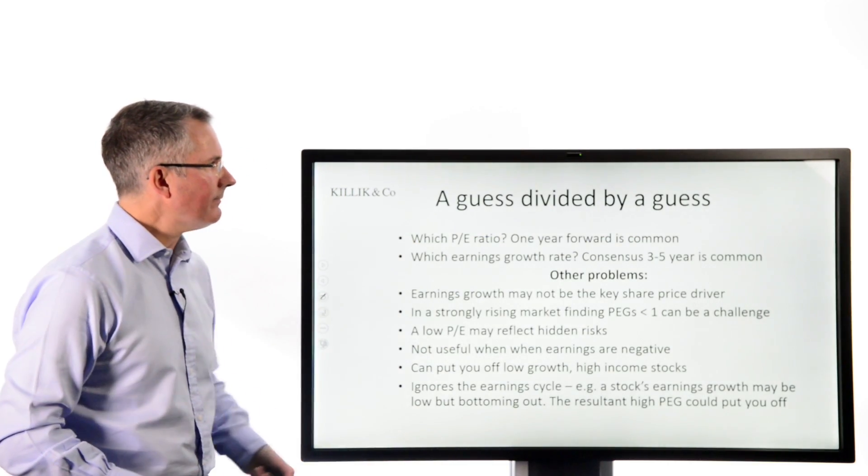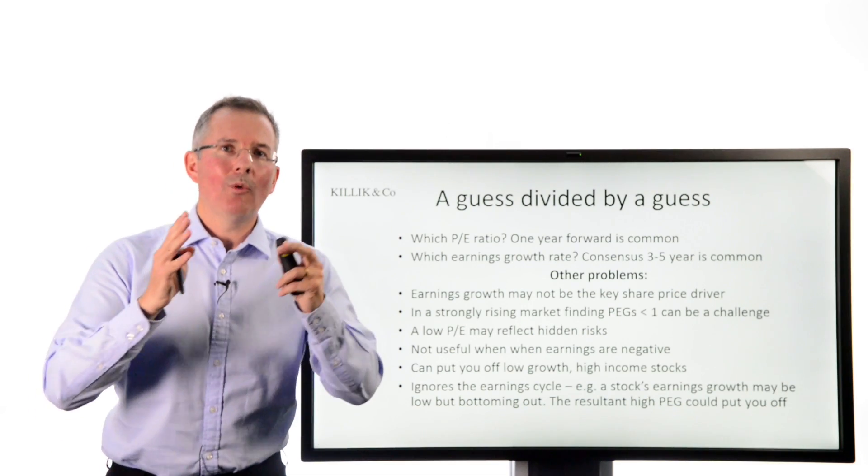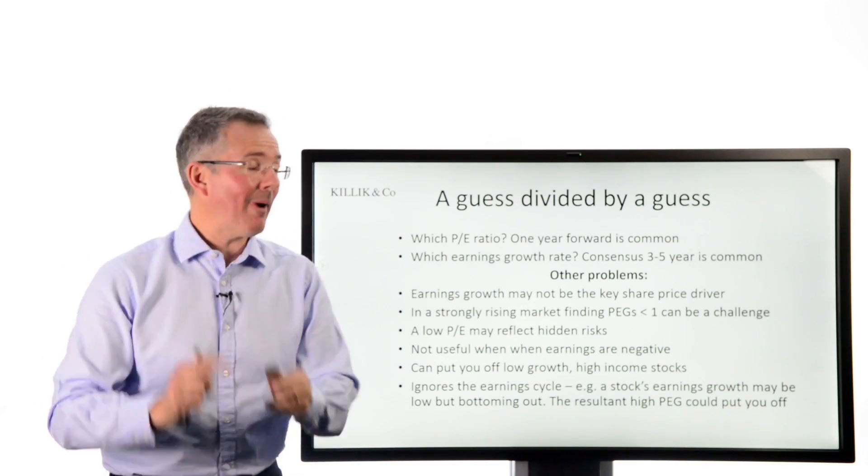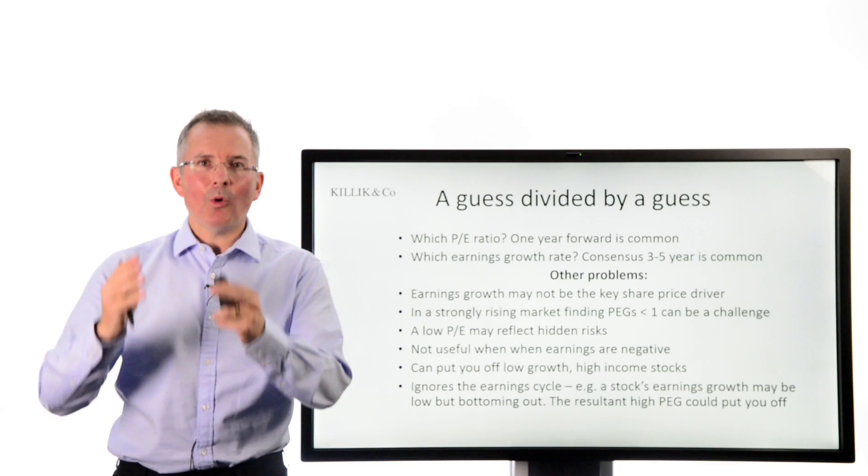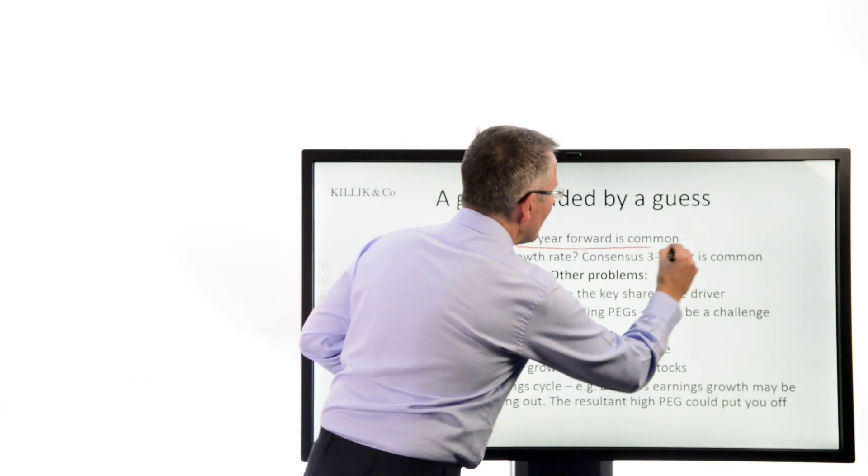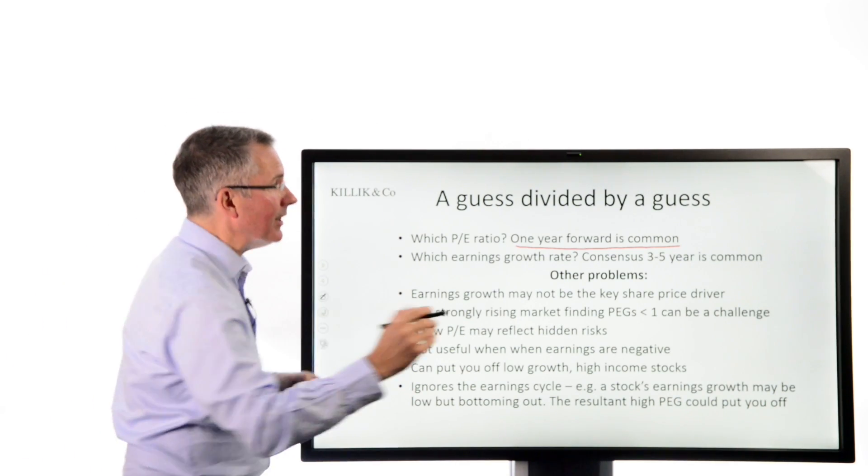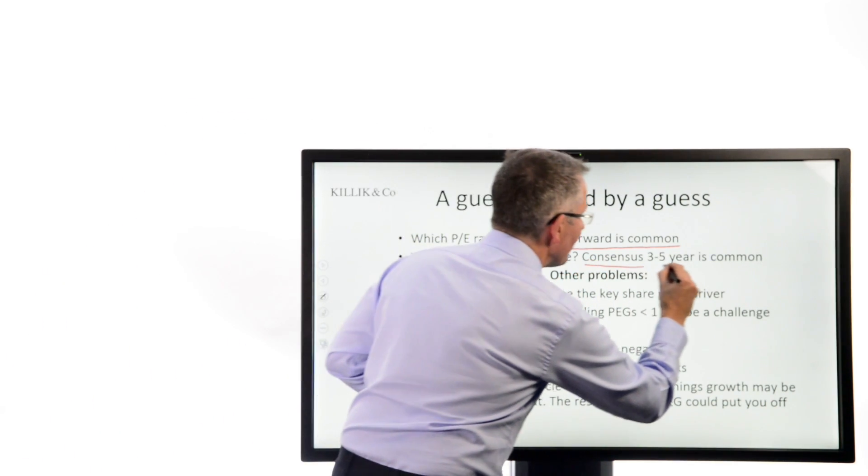Because the PEG is simple, but that's also one of its drawbacks. It's the attraction and the drawback. First of all, think about what I've just done to get the PEG. I've taken a forecast PE ratio and divided it by a forecast average earnings growth rate derived over three or five years.